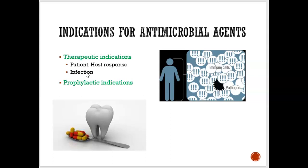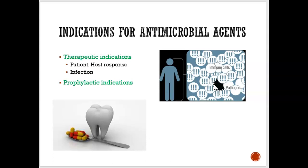Now if you absolutely need antibiotics, they would prescribe them very carefully — they don't want to over-prescribe. One thing to keep in mind is the patient and host response. If you have bacteria inside your body, we want our immune system to kill the pathogen. But sometimes our immune system isn't able to kill the bacteria, and so we need an antibiotic to help. Host response means: is your body able to kill the bacteria? If not, we're going to need antibiotics.